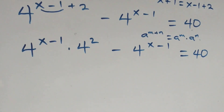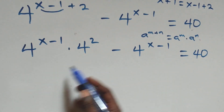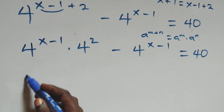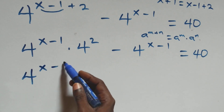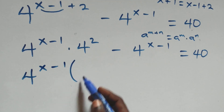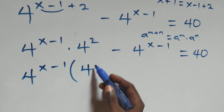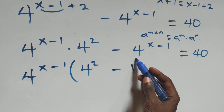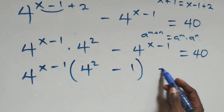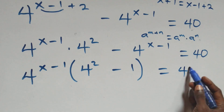The next step: we factor out 4 raised to the power x minus one as a common factor. Inside the bracket we have 4 squared minus one, which equals 40 on this side.